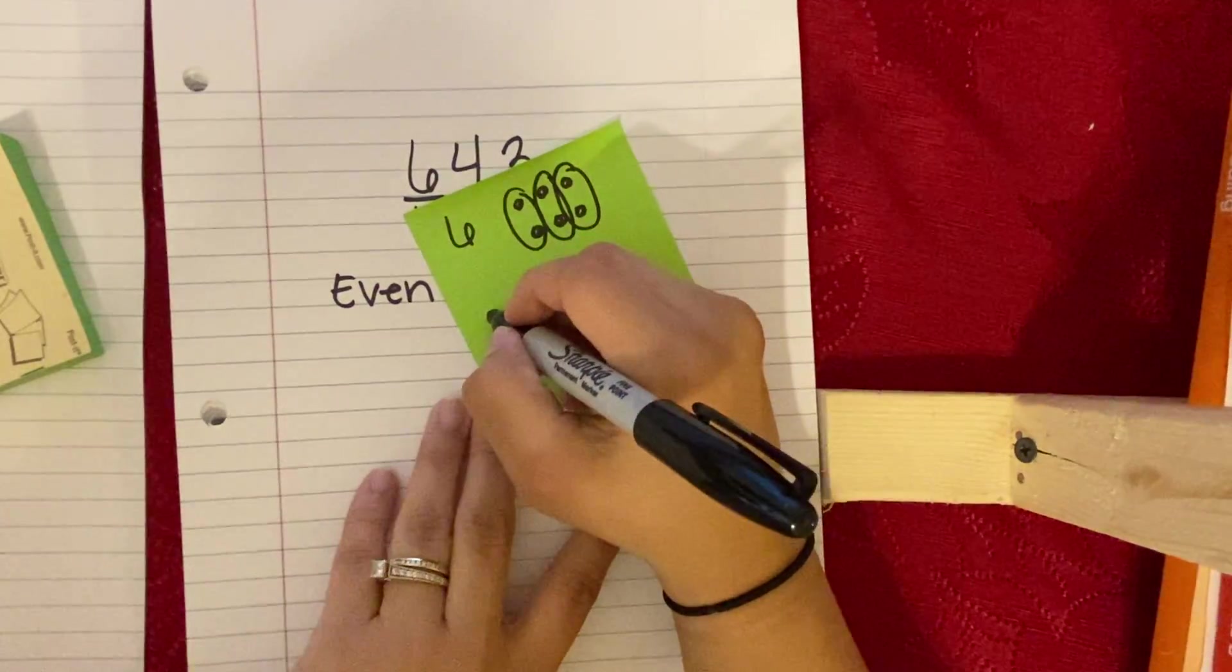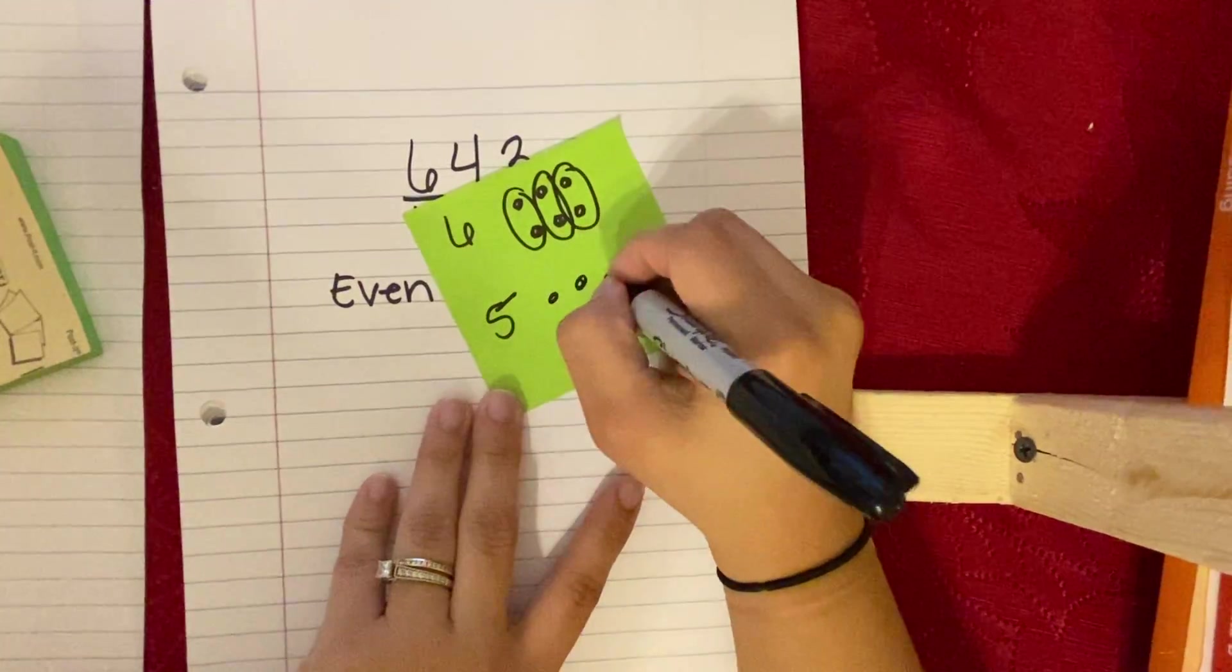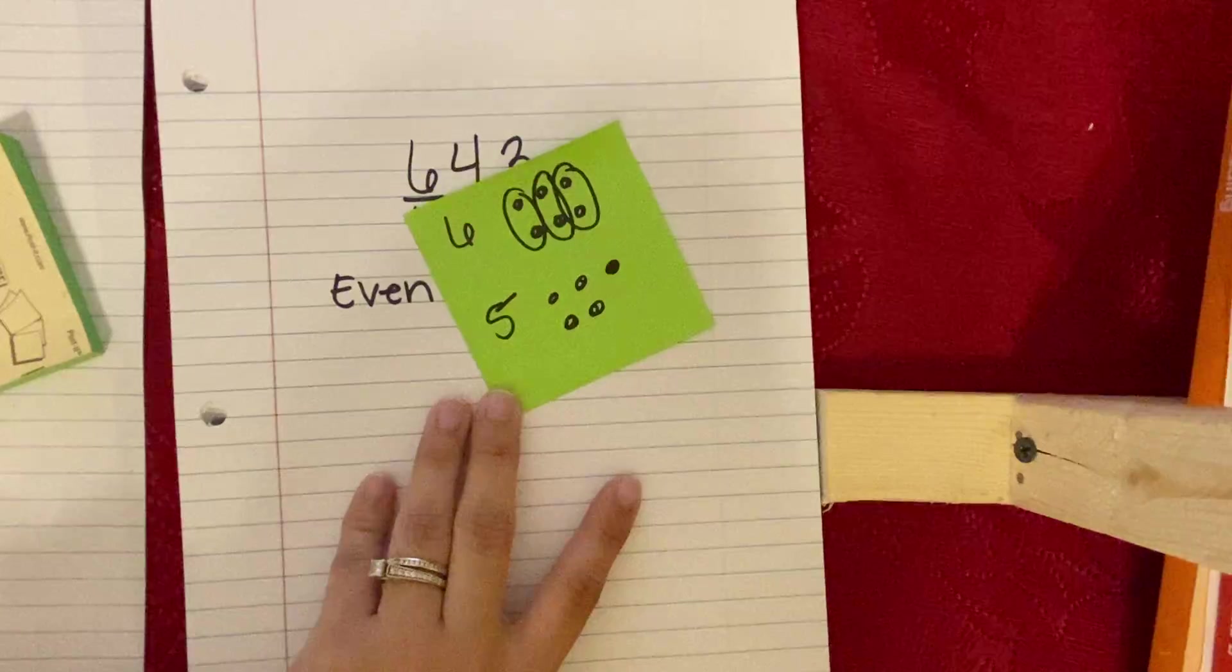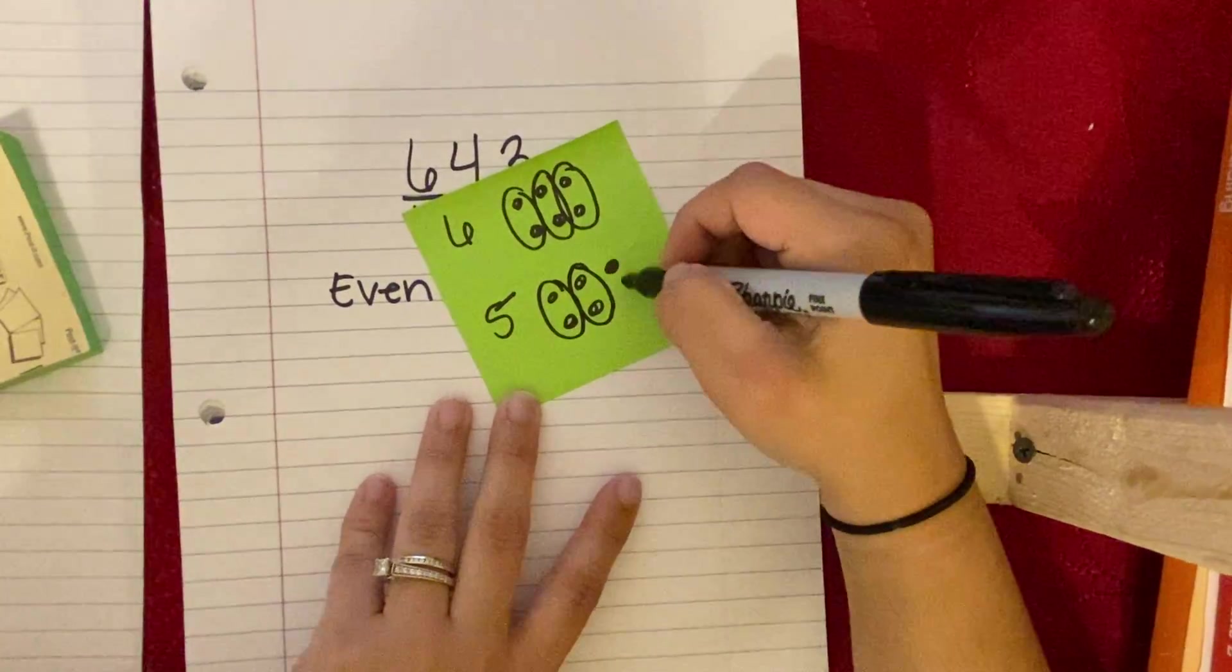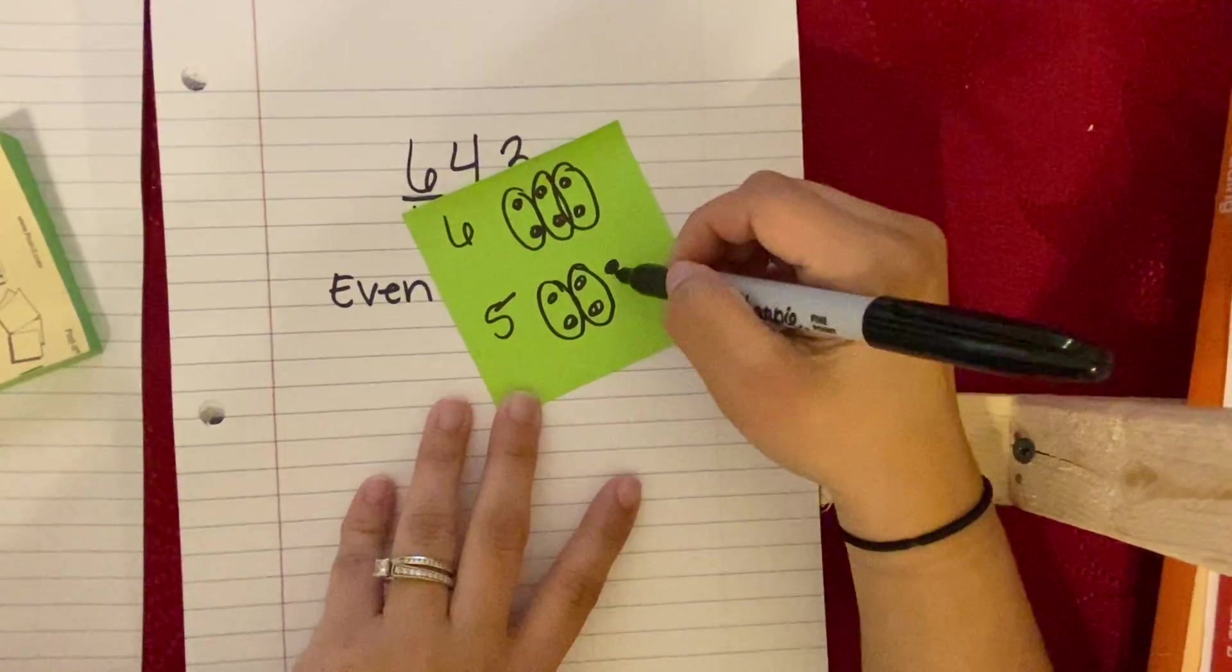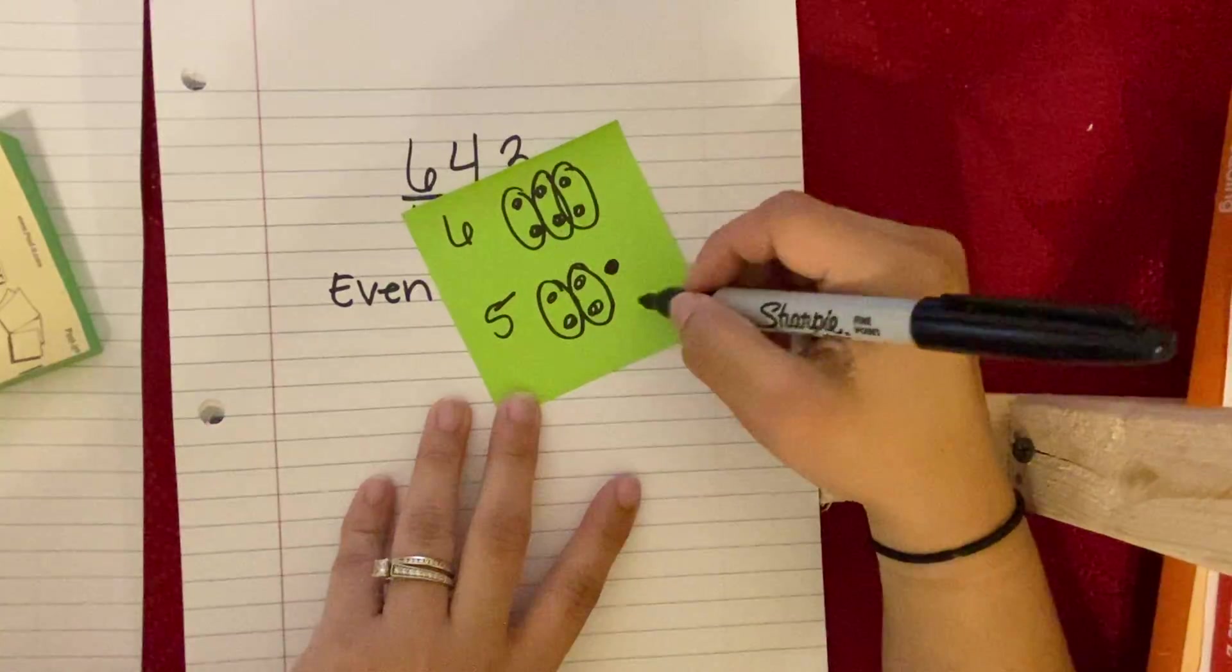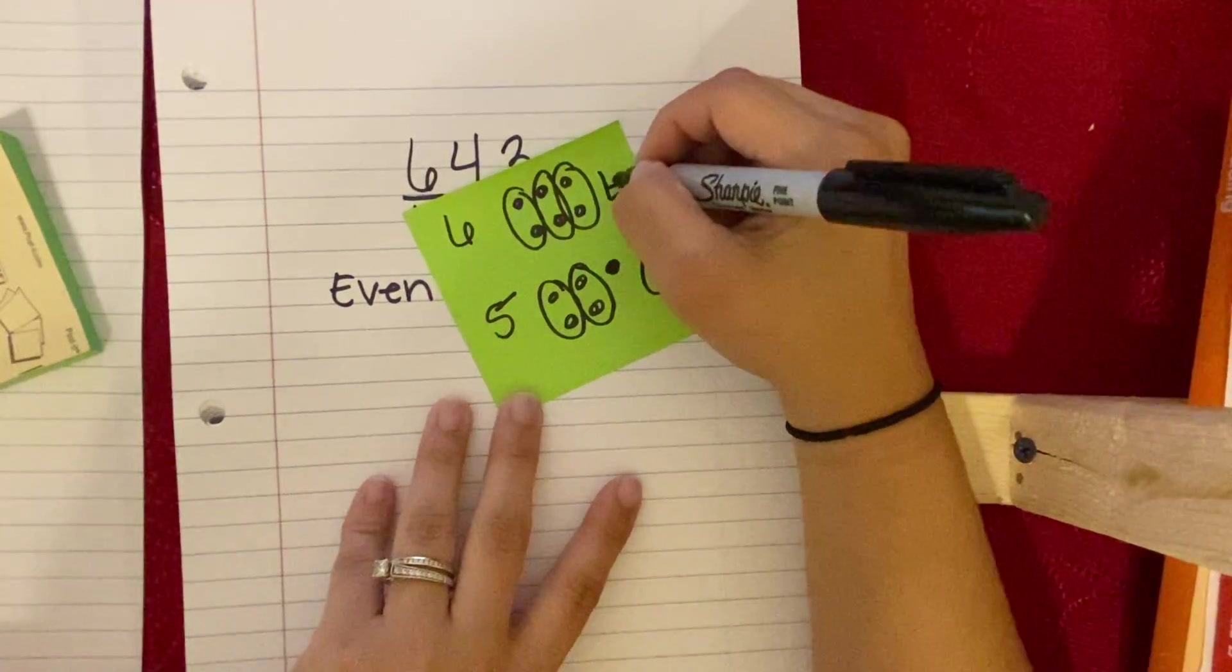So what happens if I have the number five? One, two, three, four, five. Can that be divided into equal groups? So two, two, oh, guess what? I have one that's left out. So is that going to be even? No, that's going to be odd. So five is odd, six will be even.